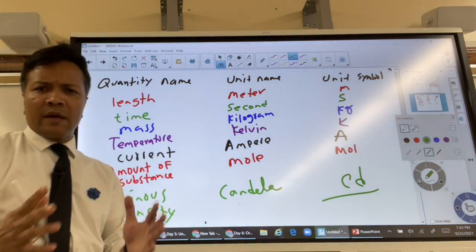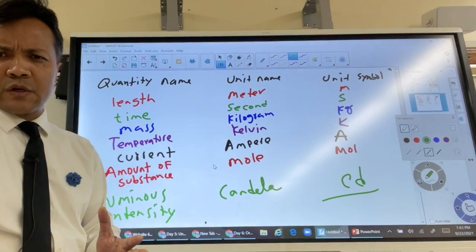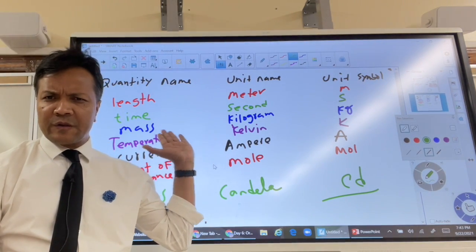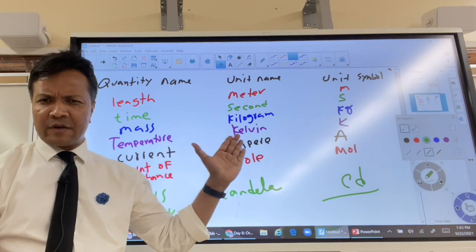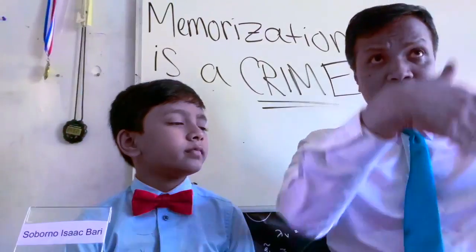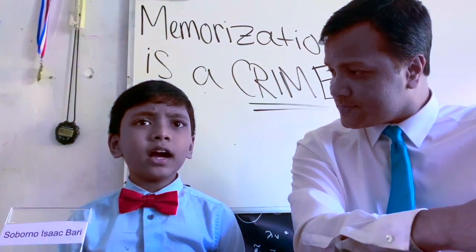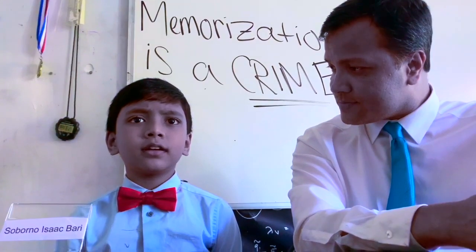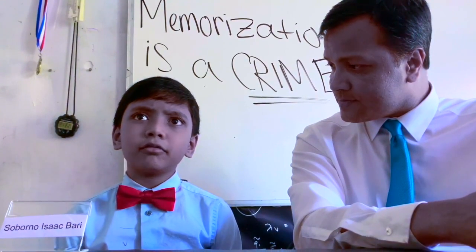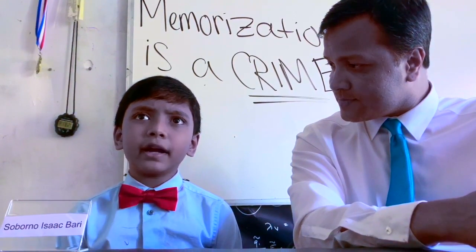I'm going to invite two guests to help you understand these seven fundamental quantities, and let's remind everyone what SI unit means. SI stands for Sistema International — it was invented by the French. What is the SI unit for length? Meters.